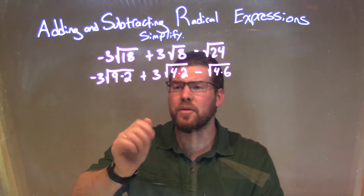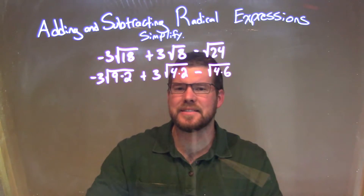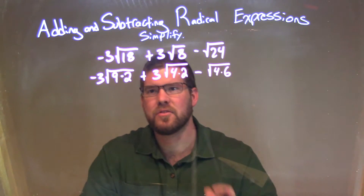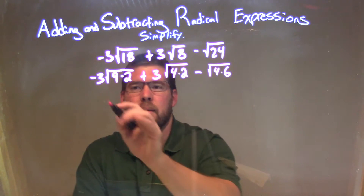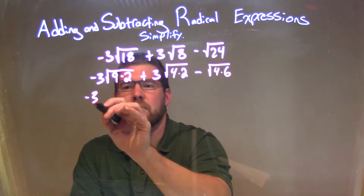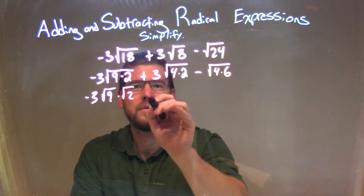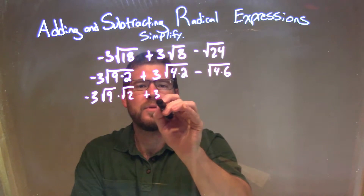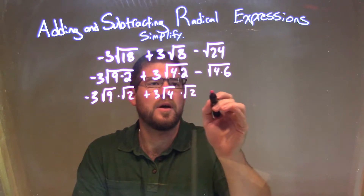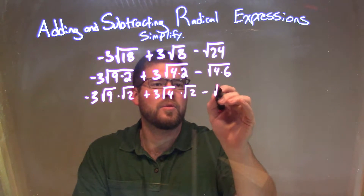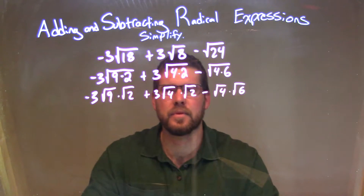So when I do this now, I know since it's multiplication between each one, I can separate that and have a square root of each one individually with multiplication separating them. So we have negative 3 times the square root of 9 times the square root of 2, plus 3 times the square root of 4 times the square root of 2, minus the square root of 4 times the square root of 6.